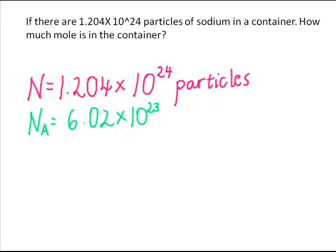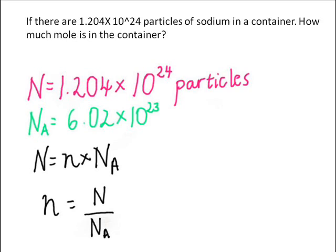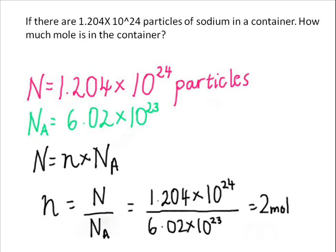Avogadro's number, always the same, 6.02 times 10 to the 23. We write down our formula and make little N, or the number of mole, the subject. So little N is N over NA. Then we can substitute our numbers in. So big N is 1.204 times 10 to the 24 over Avogadro's constant, and we get 2 mole as our answer.